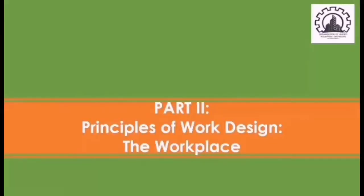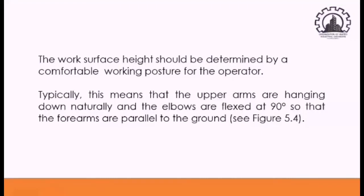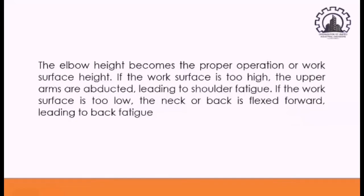I'm here to discuss the part two which is the principles of work design, the workplace. The first lesson would be determine work surface height by elbow height. The work surface height should be determined by a comfortable working posture for the operator. Typically, this means that the upper arms are hanging down naturally and the elbows are flexed at 90 degrees so that the forearms are parallel to the ground. In Figure 5.4, we can see that the upper arms are hanging down while the elbows are flexed at 90 degrees so that the forearms are parallel to the ground. The elbow height becomes the proper operation or work surface height.